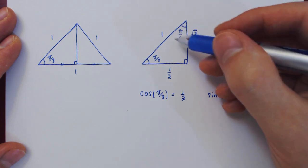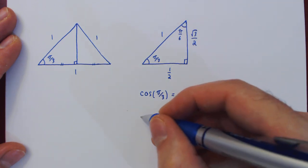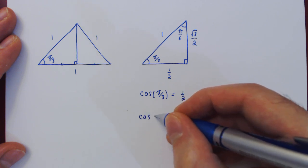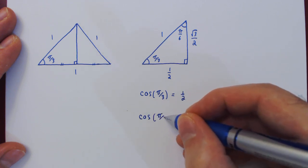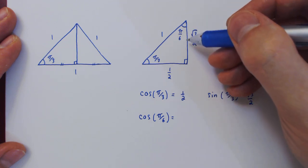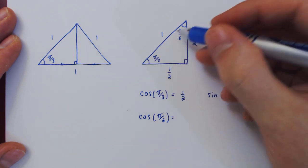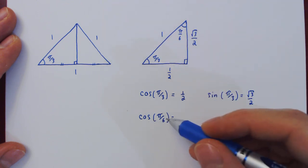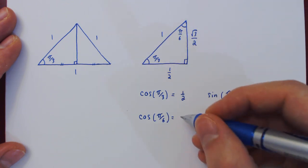Now we can consider the other angle, π/6. Cosine of an angle is the adjacent side, √3/2, over the hypotenuse 1. So cos(π/6) is √3/2.